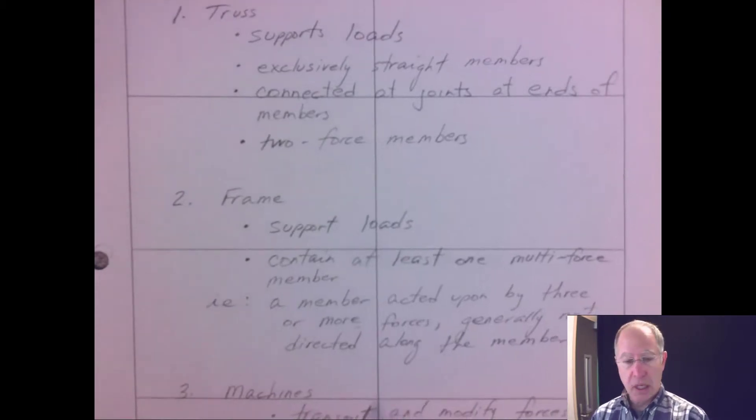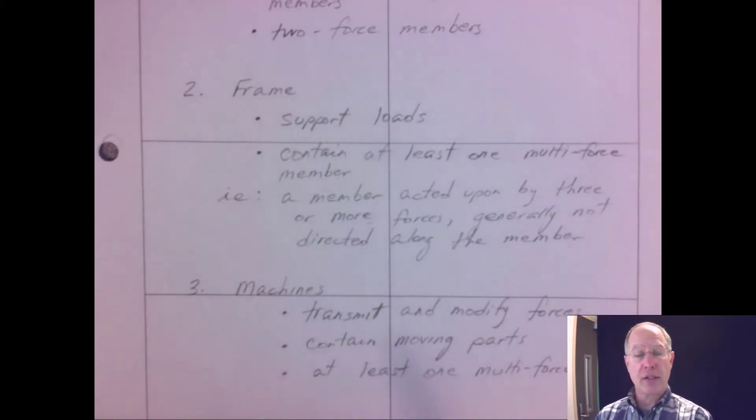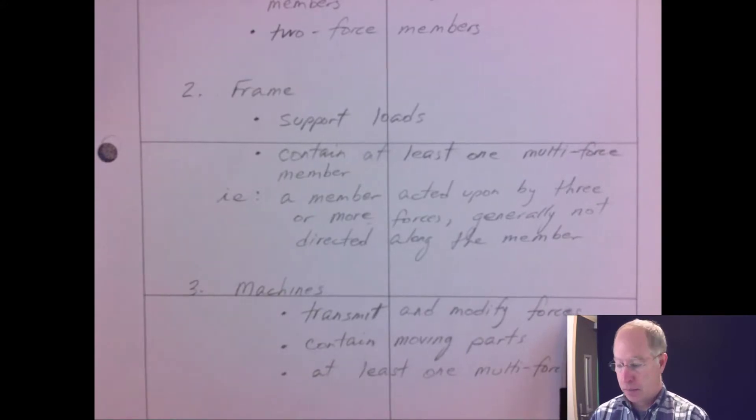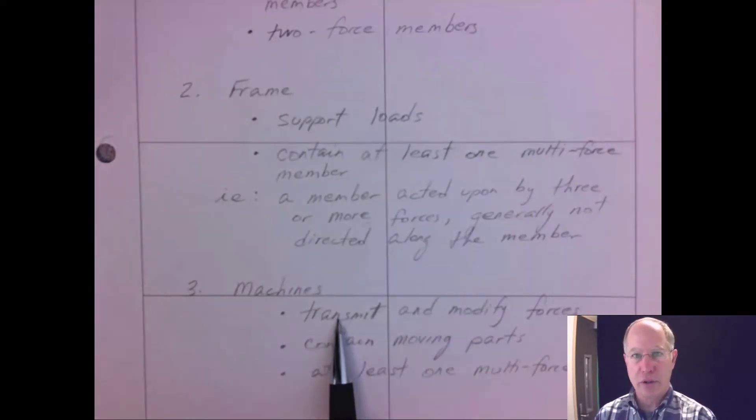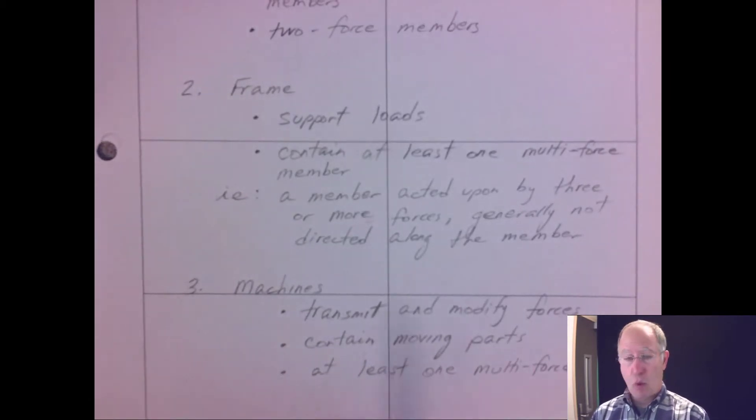And then machines. Frames and trusses support loads, machines transfer or transmit and modify loads. They can take a force and use it for leverage. You can think of a system of pulleys where you can lift a very big load with a very small amount of effort—that'd be a machine. Machines transmit and modify forces and they move. They contain moving parts such as the pulley, and also like frames, they contain at least one multi-force member.